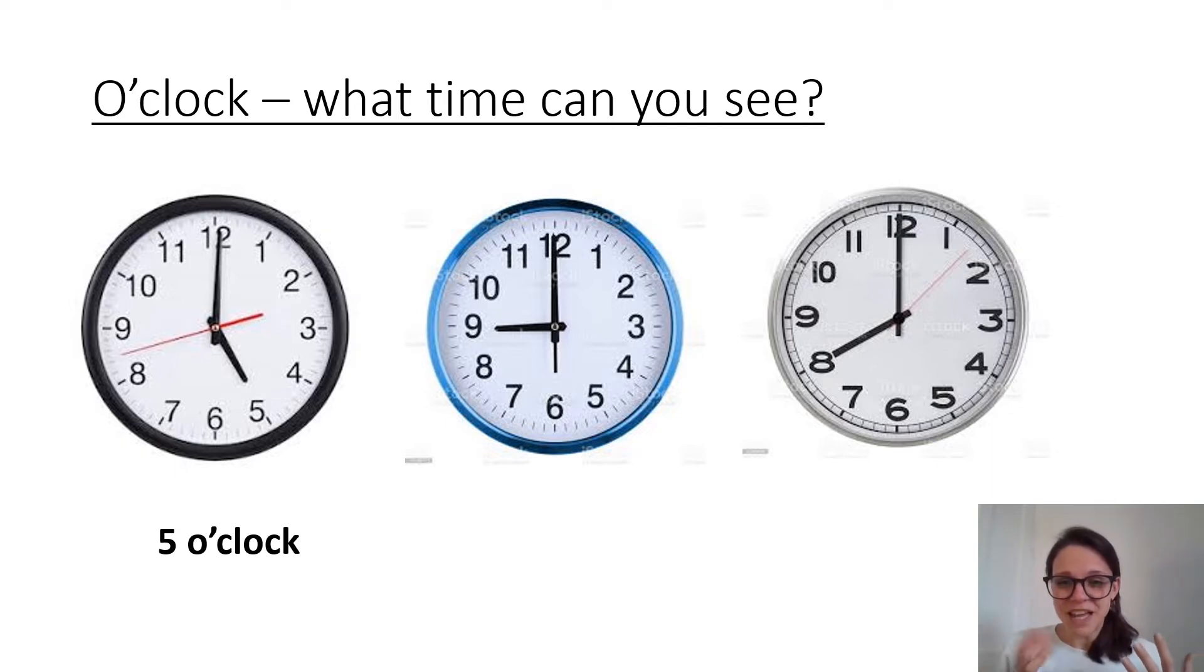How did you get on? Sometimes it's a bit hard to tell which is the shorter hand and which is the longer hand. But if you look carefully, the short hand never goes over the number. It always stops short of the number so you can still see it. So if you look at that middle blue clock, you can see that the short hand is pointing to the nine. It's nine o'clock.